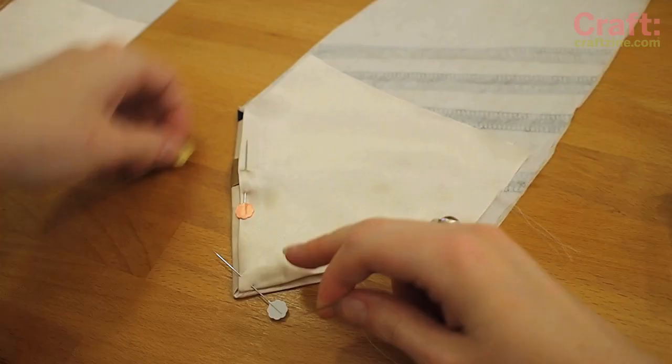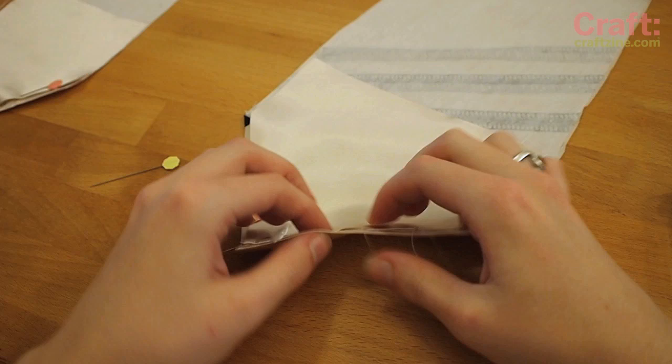Line up and pin the lining pieces to the main body of the tie and then use an invisible hem stitch to join the two. Be sure not to let the needle pierce the front surface of the tie.